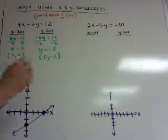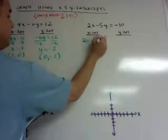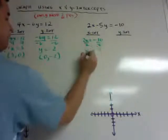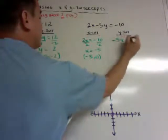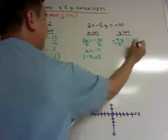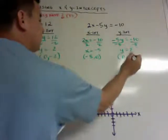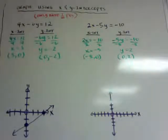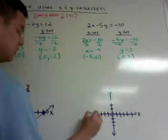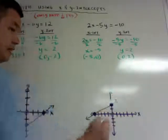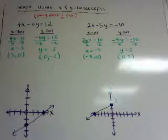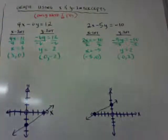Here's another example: 2x minus 5y equals negative 10. For the x intercept: 2x equals negative 10, divide by 2, x equals negative 5, so (negative 5, 0). For the y intercept: negative 5y equals negative 10, divide by negative 5, y equals 2, so (0, 2). When I graph it, negative 5 comma 0 is over here, 0 comma 2 is over here, and I graph the line going this way.